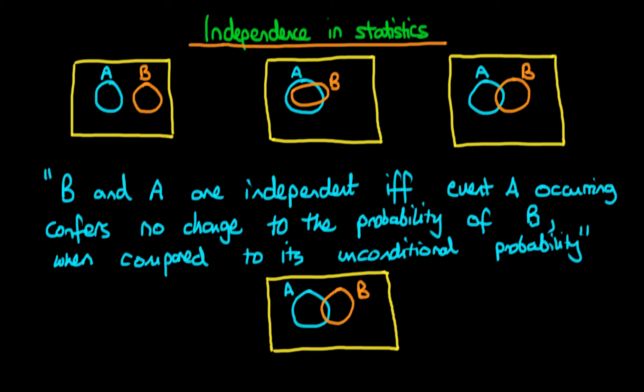In this video I want to provide an introduction to the concept of independence in statistics. I've already written down a definition here: B and A, if B and A represent events, they are independent if and only if event A occurring confers no change to the probability of B when compared to its unconditional probability.